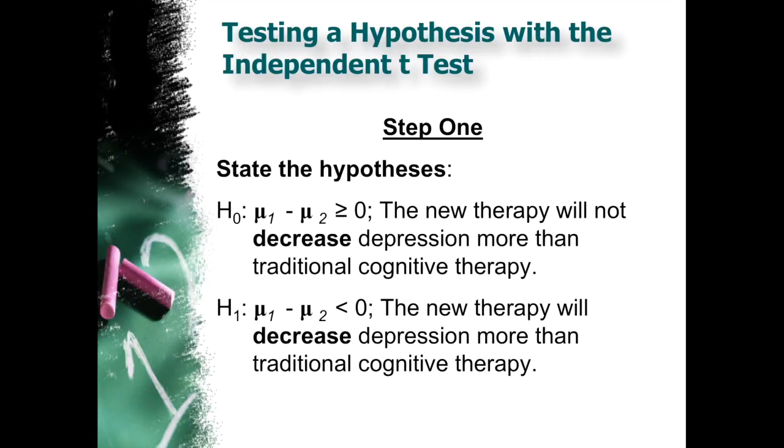Step 1, state the hypothesis pair, right? So the null hypothesis is mu1 minus mu2 is greater than or equal to 0. And so, or in language, the new therapy will not decrease depression more than traditional cognitive therapy. And the alternative hypothesis would then be mu1 minus mu2 is less than 0. Or the new therapy will decrease depression more than traditional cognitive therapy. And again, we still try to reject that null hypothesis.